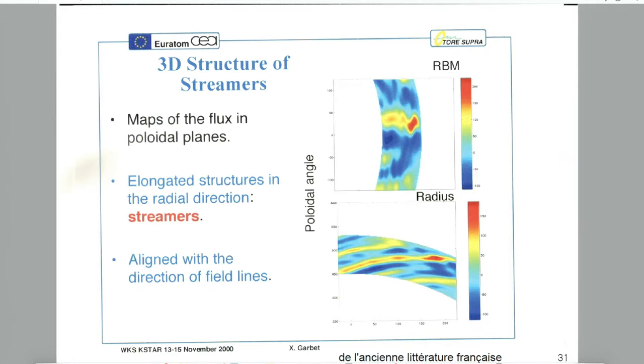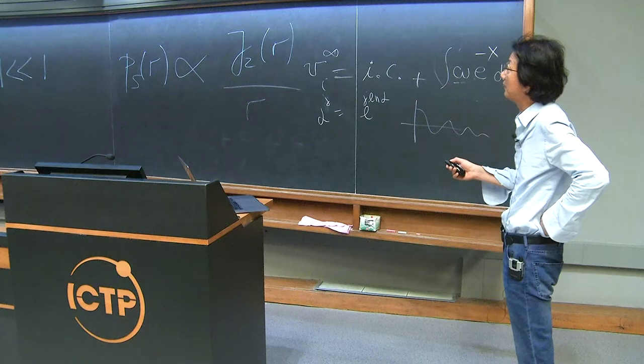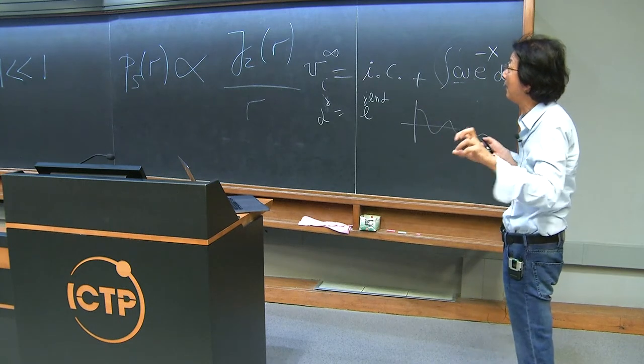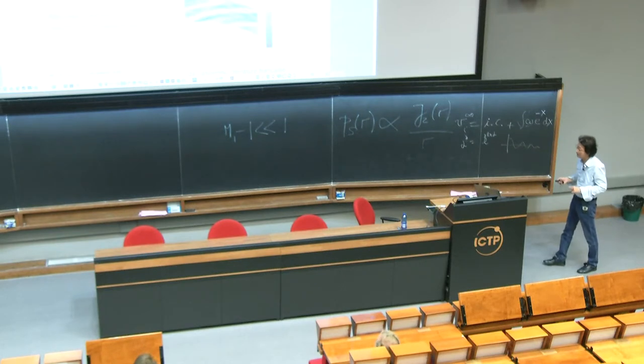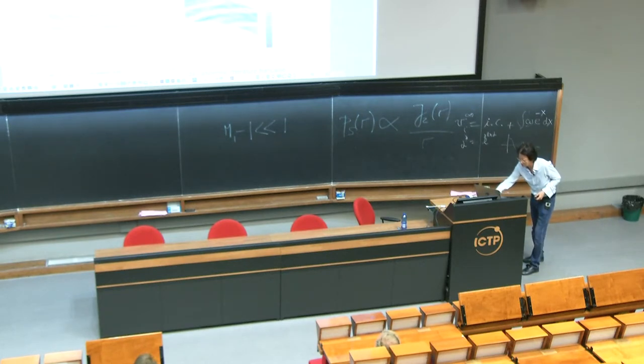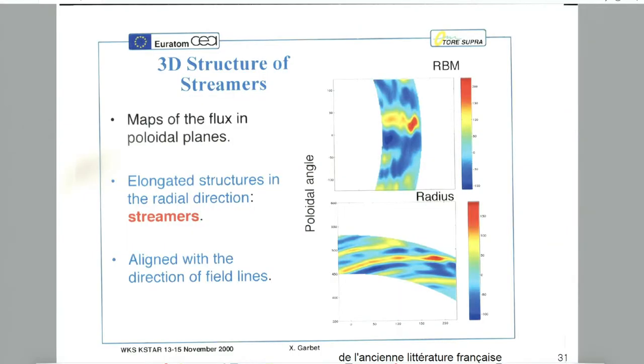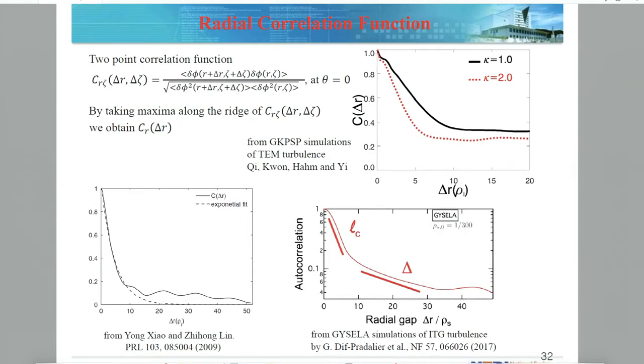Since the early days of nonlinear simulations using fluid models, toroidal simulations have seen something called streamers, which are radially elongated, highly anisotropic in the poloidal cross-section, but still align with helical magnetic field. Due to some reason, this is quite a natural nonlinear structure, and also linearly this is the global eigenmode, which is due to the coupling of different poloidal harmonics. More recently, from gyrokinetic simulations, many simulations have identified two different characteristic spatial scales.